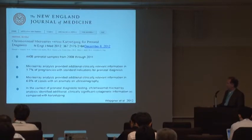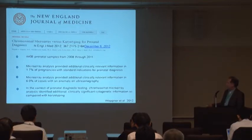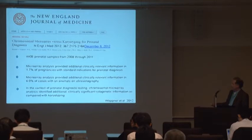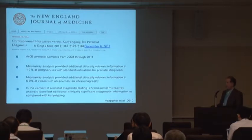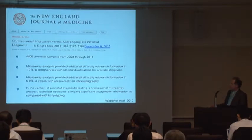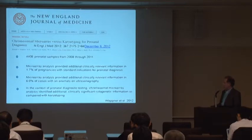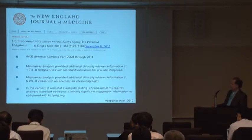The second study is by Wapner et al. They had a smaller set, 4,400 samples, and basically the same findings. Their study found that they picked up clinically relevant information in 1.7 percent of their cases of those cases that had a normal karyotype, and these are for a standard indication of AMA or positive screen. If there was an ultrasound anomaly, 6 percent of those cases with normal karyotype were abnormal with something appreciable. So again in the context of prenatal testing, chromosomal microarray analysis identified additional clinically significant cytogenetic information as compared with karyotyping.